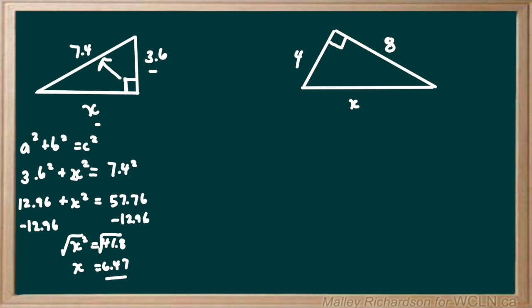Moving on to our next example, we have x right across from our right angle and we have 4 and 8 on either side. Again, let's write our formula: a squared plus b squared equals c squared.